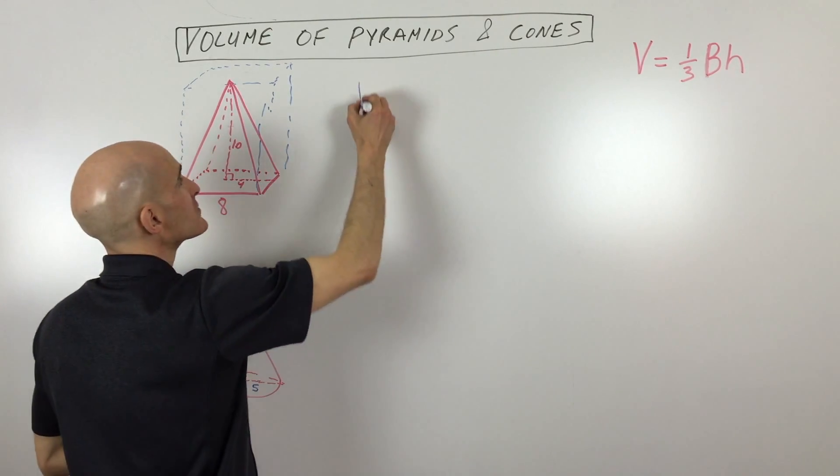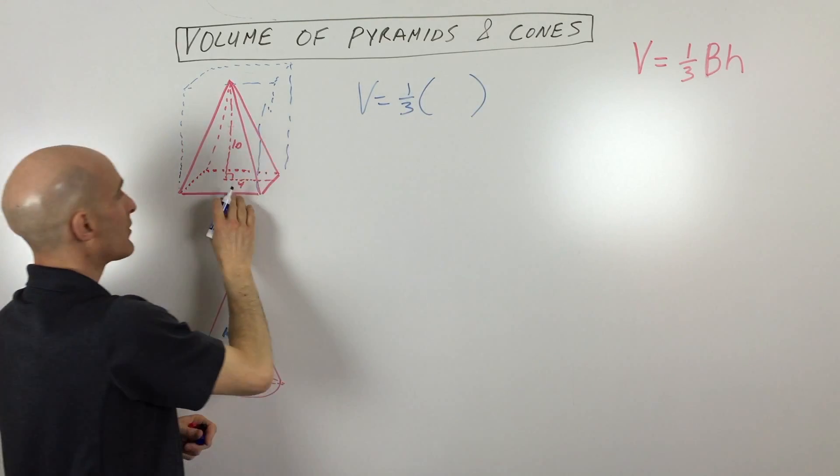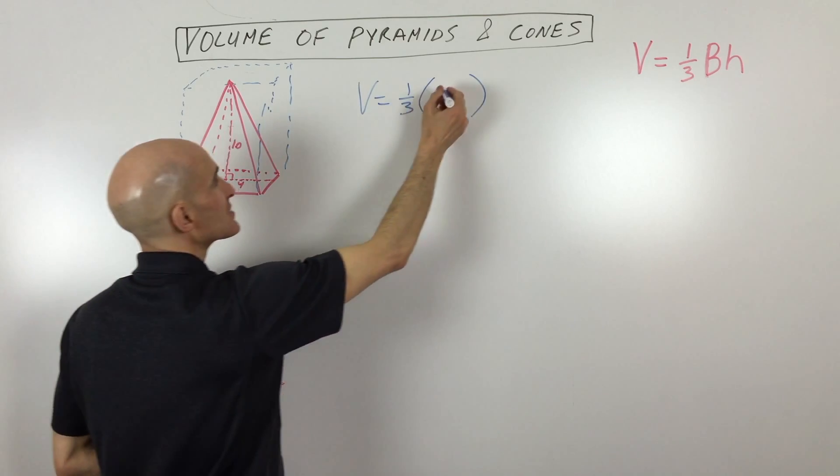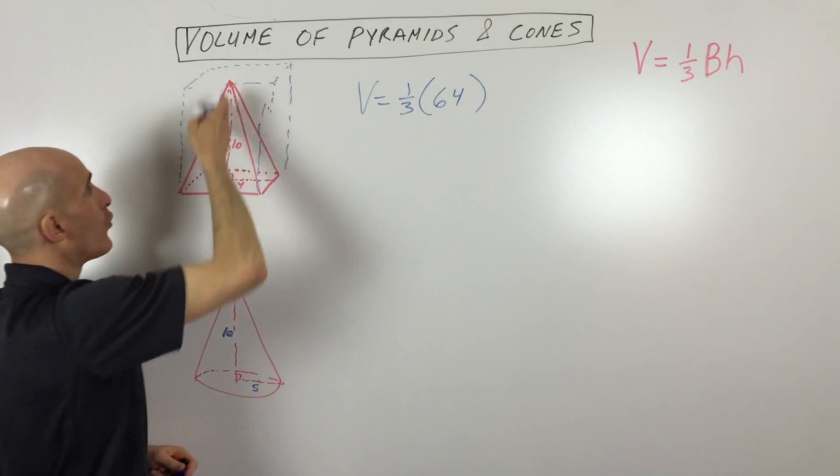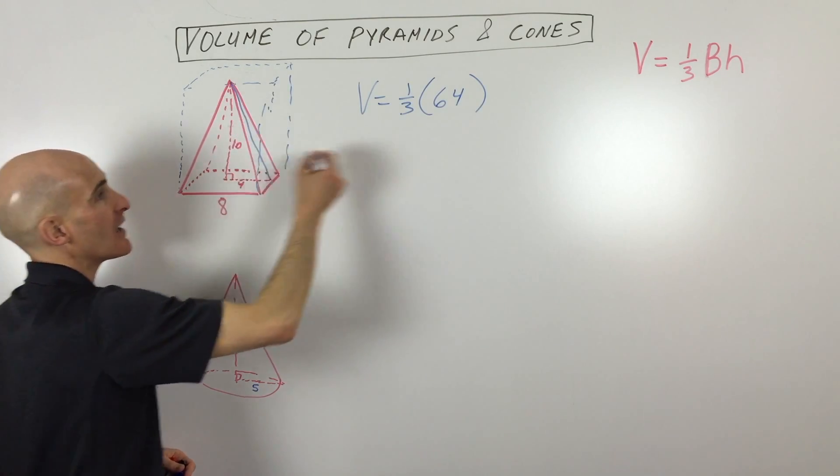But let's go ahead and do this. So it's volume equals one third, area of the base. Now the base here you can see is a square. So it's going to be eight times eight. So that's 64 times the overall height. So we don't want this height here. Sometimes it'll give you this. We don't want that one. We want 10.